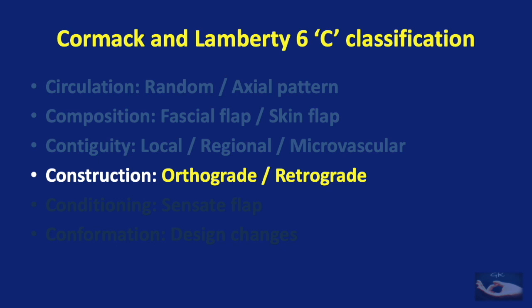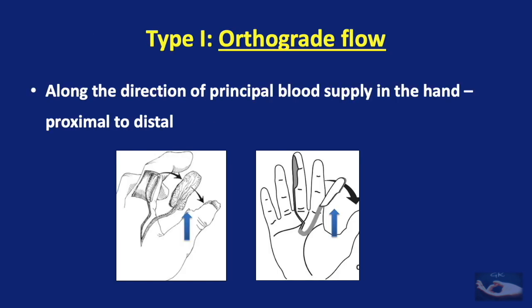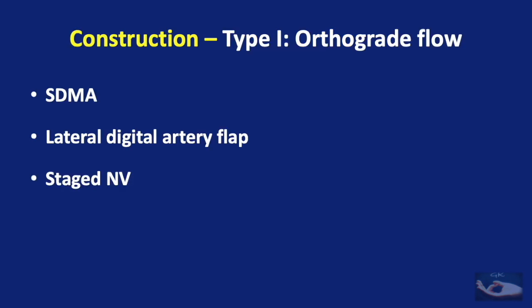The design of the intrinsic flap in the hand based on the direction of blood supply is also interesting. There are four construction types: Type 1 — orthograde flow; Type 2 — retrograde flow; Type 3 — communication from the volar to the dorsal side; and Type 4 — communication from the radial to the ulnar side or vice versa. Type 1 refers to orthograde flow, that is, along the direction of principal blood supply in the hand, proximal to distal.